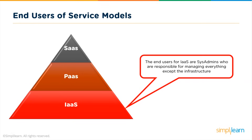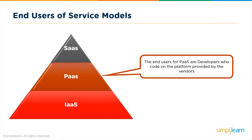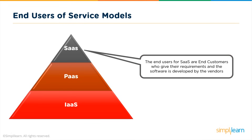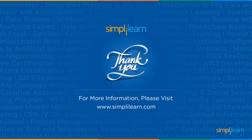The end users of cloud computing service models can be pictured as a pyramid. In IaaS, the end users are system admins responsible for maintaining everything except the infrastructure. In PaaS, the end users are developers who code on the platform provided by the vendors. In SaaS, the end users are customers who only give their requirements, and the software is built based on those requirements by the vendors.